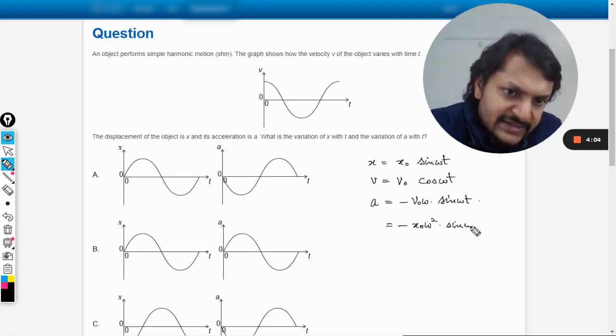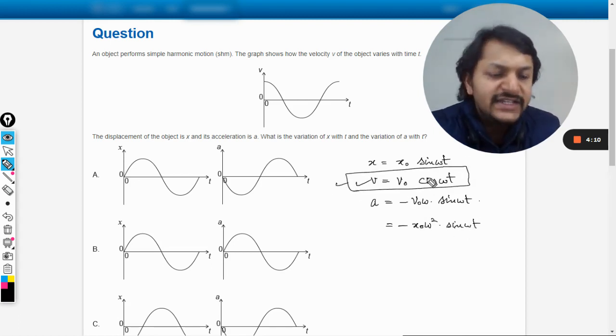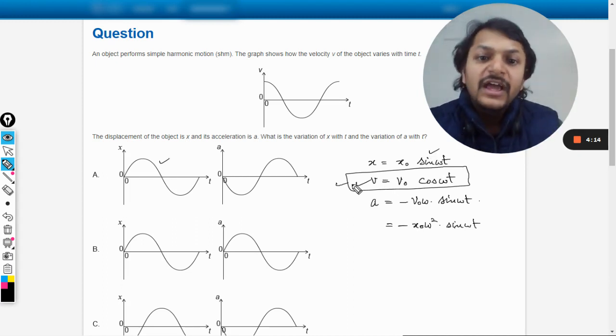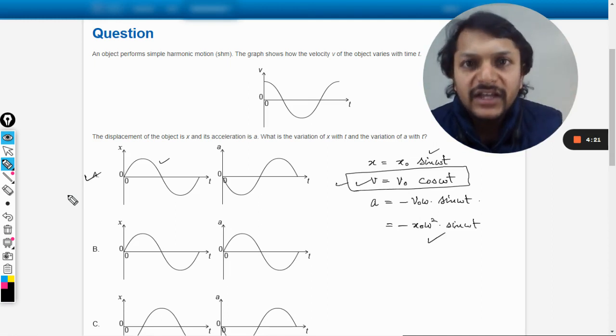Acceleration is given like this. So from here also it is evident that the velocity function is cosine, so they have chosen this. So obviously for the displacement we would be taking the sine variation, and for the acceleration we would be taking negative cosine variation. And hence the answer is A.